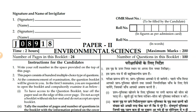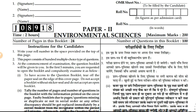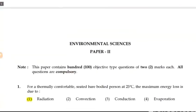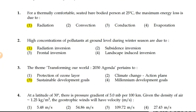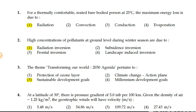We will discuss some important questions from Environmental Science Paper 2 for NTA UGC NET. The first question is: for a thermally comfortable seated bare-bodied person at 25 degrees centigrade, the maximum energy loss is due to what? The maximum energy the body will lose is through radiation.